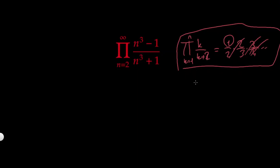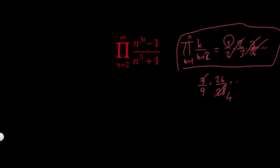I'm starting at n=2 because the n=1 case is just 0. So if I write out terms: n=2 gives 7/9, next is 26/28 — nothing cancels nicely, and the numbers grow fast. My goal is to simplify this and find the recursive relationship between n³−1 and n³+1.